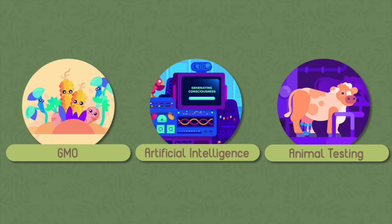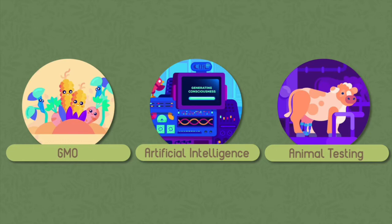Next is animal testing, which has been very important in drug development, cosmetics development, and food development. There is the ongoing question: is it ethical to use animals for the benefit of humans? Scientists have negotiated with animal welfare advocates to ensure that animals are well taken care of during experiments. But the issue remains: could science and technology introduce advances so that we will no longer have to do as much animal testing as we do now?